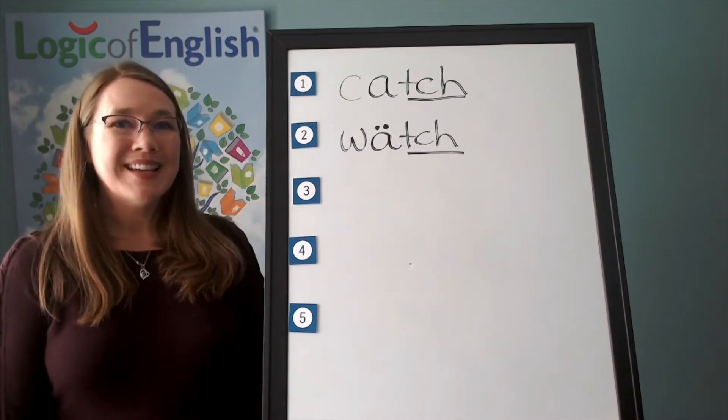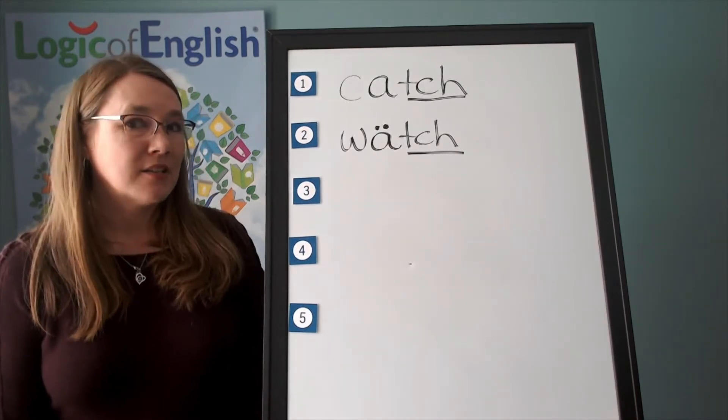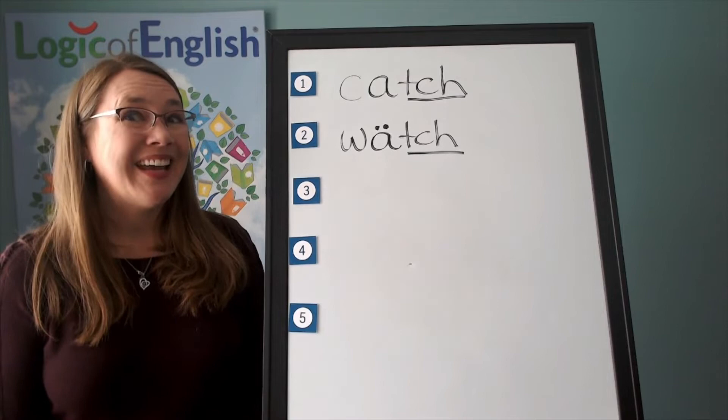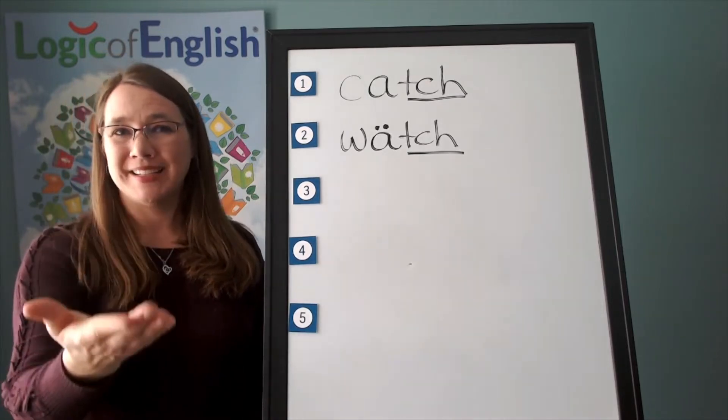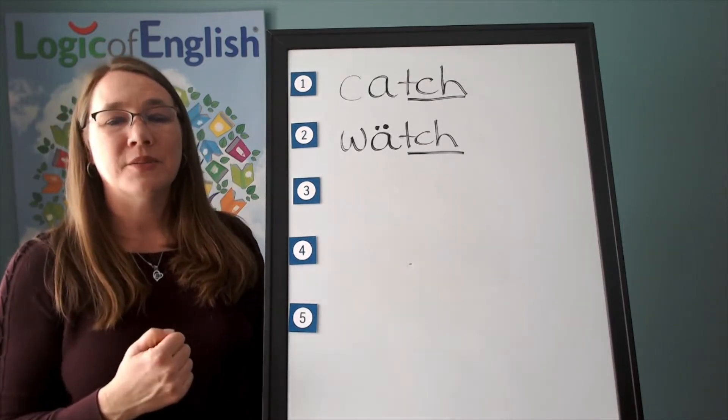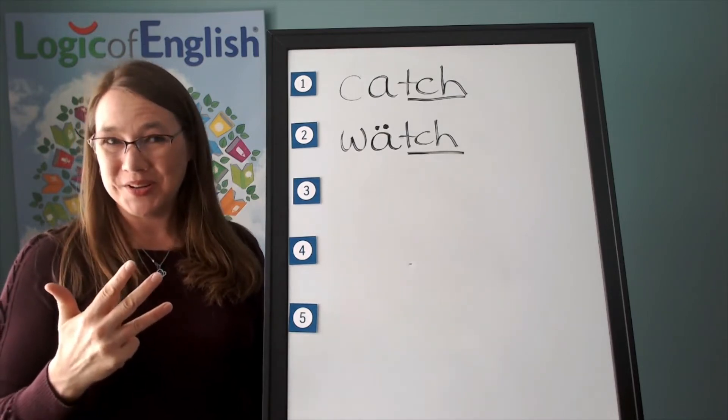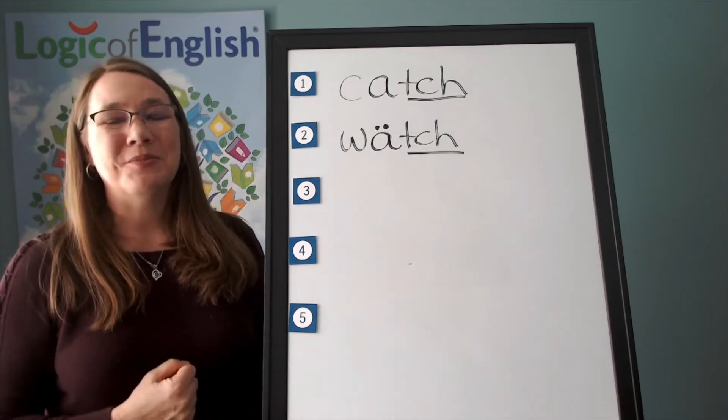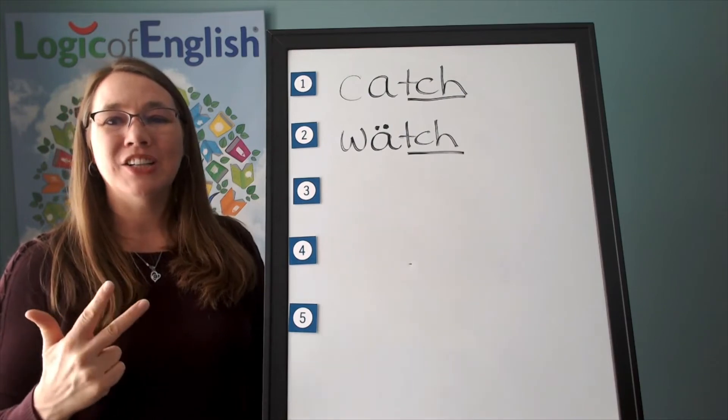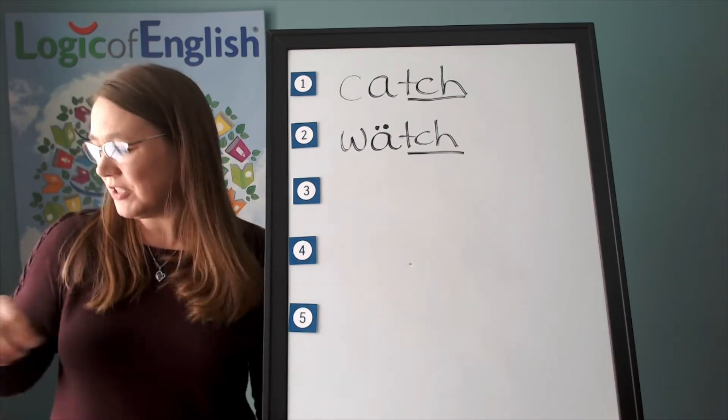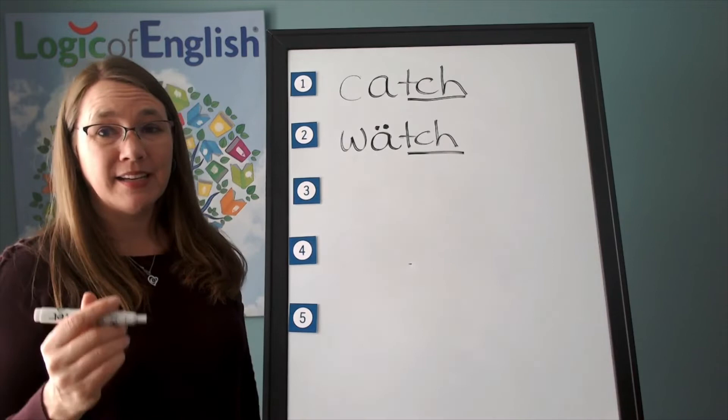The next word is hill. I would like to go sledding on that big hill. Hill. Go ahead and say hill. Let's sound it out. H, i, l, l. Did you hear that? Let's do it one more time. H, i, l, l. Good job. Let's go ahead and write it.